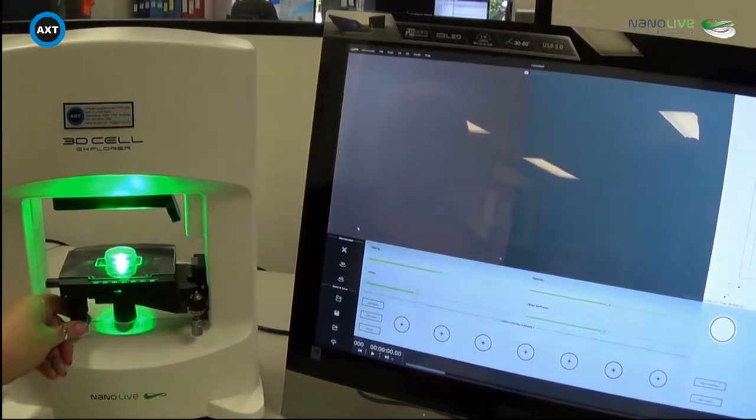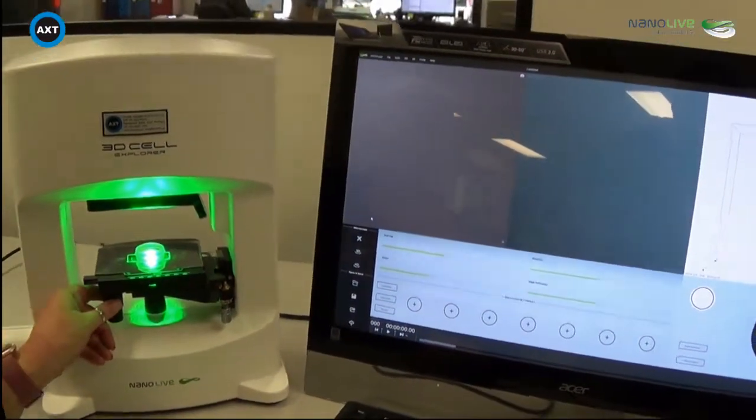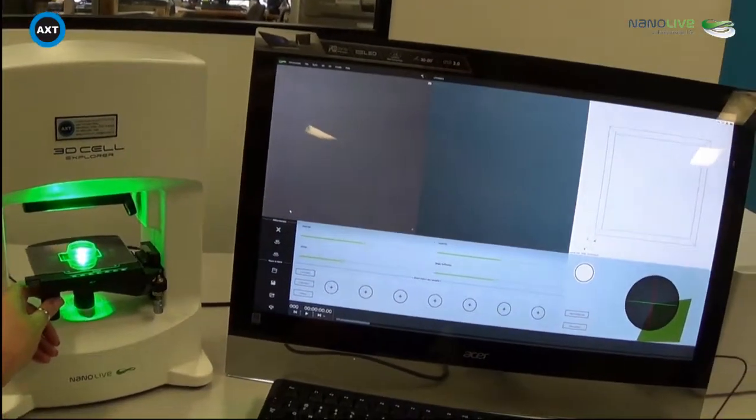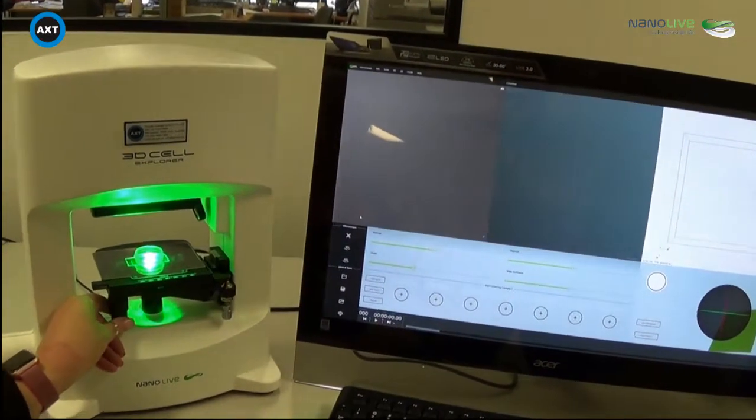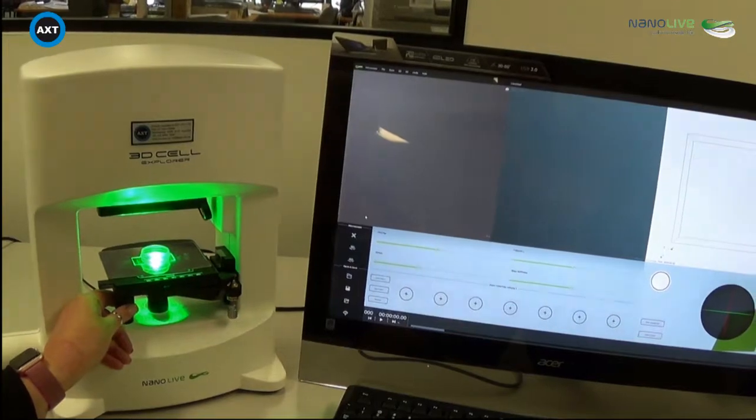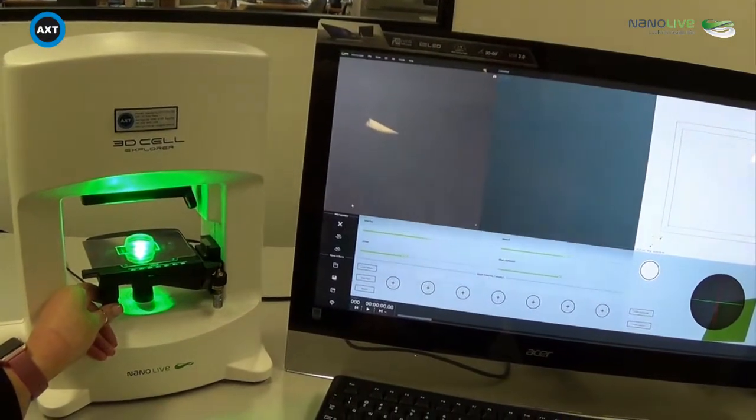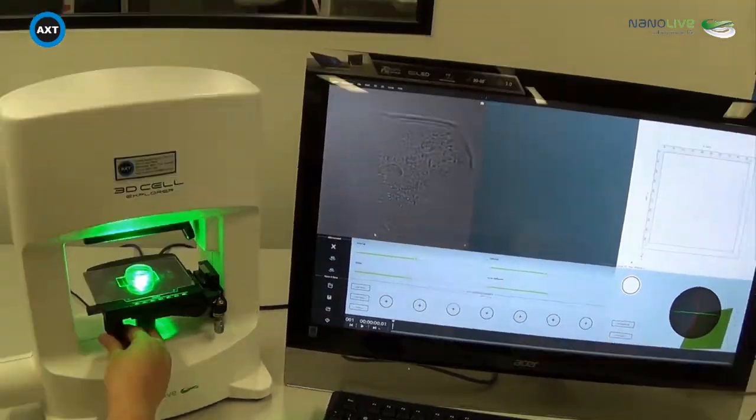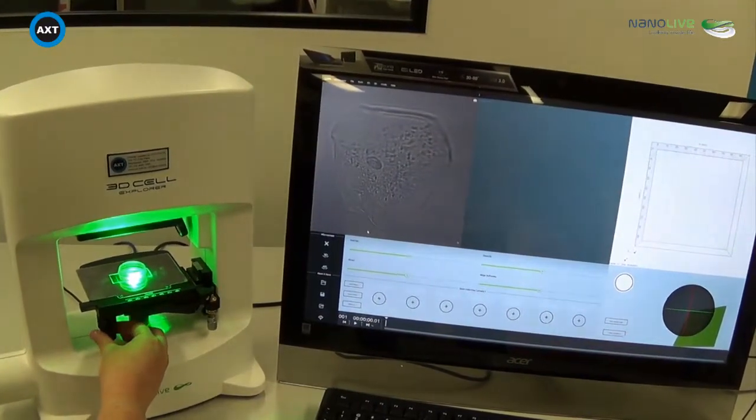I'm just going to use the XY control on the microscope stage to find our cells. The cells we're looking at today are cheek cells from inside the mouth. So we just did a very simple epithelial scrape and added the cells to just some water in the micro dish. Okay, so here's a cheek cell that we found in the dish.